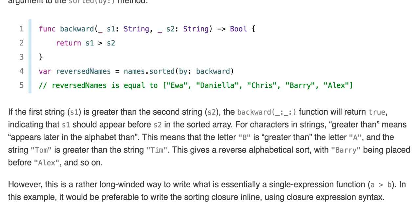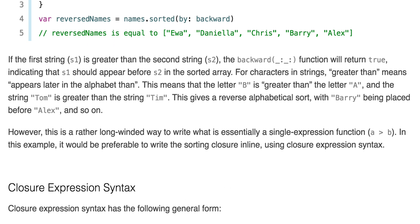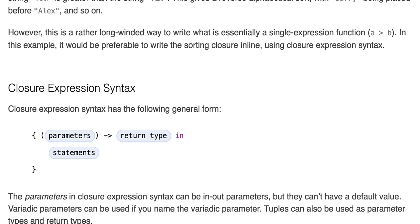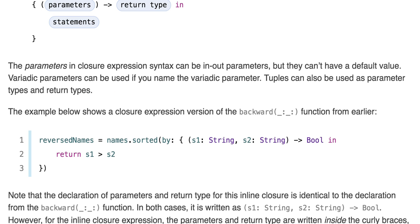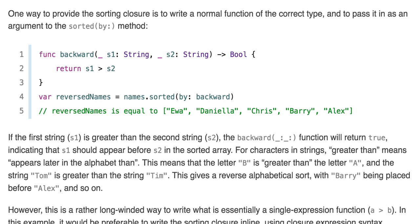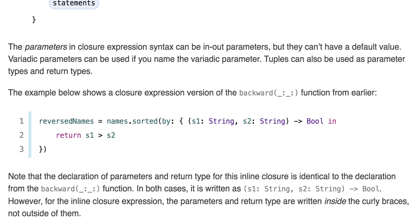However, this is a rather long-winded way to write what is essentially a single expression function: a greater than b. In this example it would be preferable to write the sorting closure inline using closure expression syntax. In general it's basically parameters, return type, in, and then a bunch of statements. So the example becomes reversedNames equals names.sorted(by:), and then we have our closure: s1, s2 strings, arrow Bool, in, return s1 greater than s2.